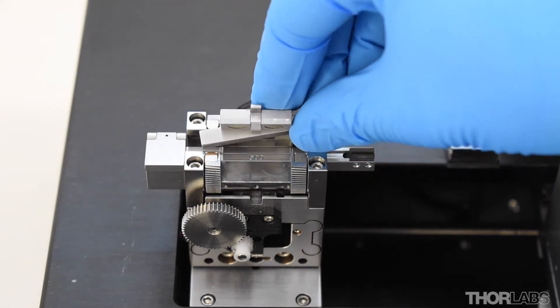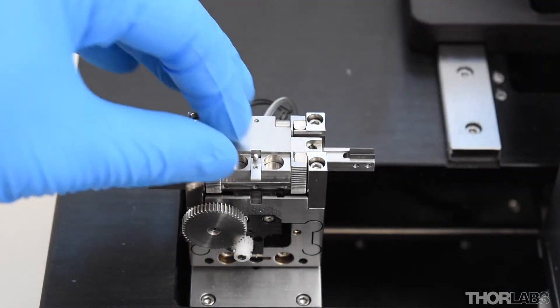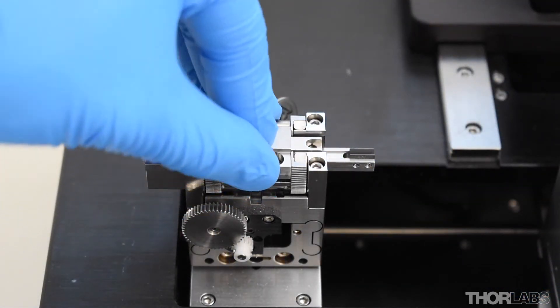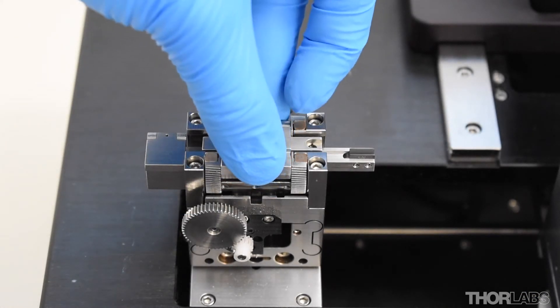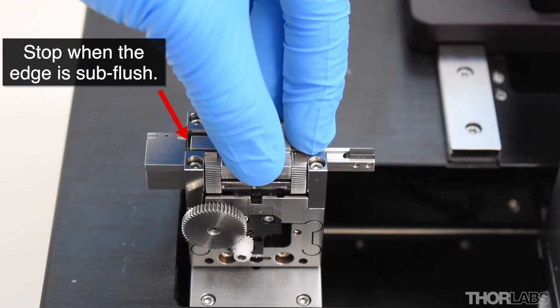Close the lid while holding onto the insert to keep it in place. Now slightly lift the lid and slide the upper insert backwards so that its back edge is level or slightly sub-flush with the back edge of the fiber holding block.